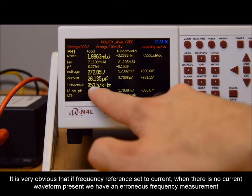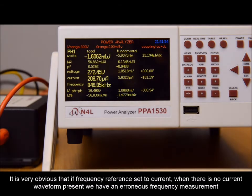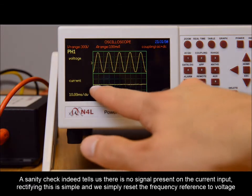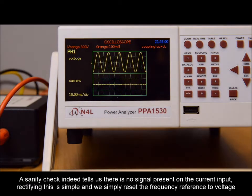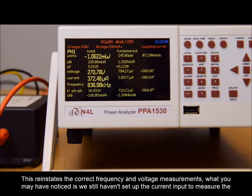It is very obvious that if frequency reference is set to current when there is no current waveform present, we have an erroneous frequency measurement. A sanity check indeed tells us there is no signal present on the current input. Rectifying this is simple, and we simply reset the frequency reference to voltage. This reinstates the correct voltage and frequency measurements.